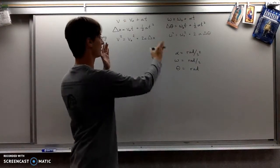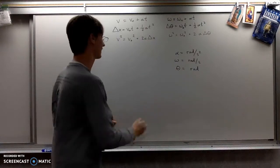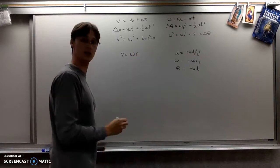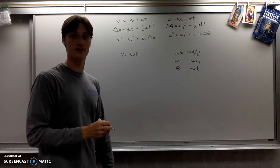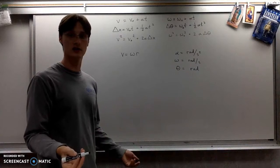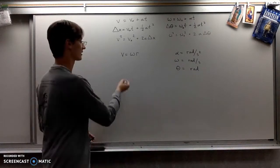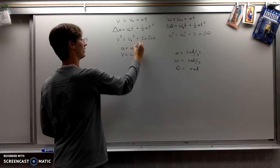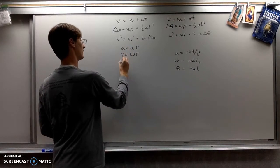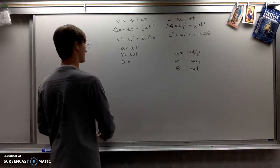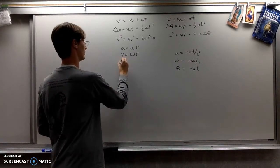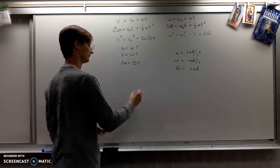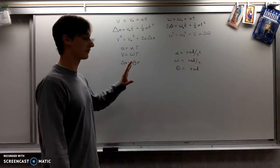So the relationship between these quantities works like this. The one you're going to get the most mileage out of is V equals omega R. But they all look exactly like that. So A equals alpha R and S or delta X equals theta R.